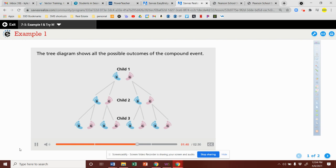The tree diagram shows all the possible outcomes of the compound event. For example, we can follow the branches on the left side of the diagram, which shows the outcome of a boy, then another boy, then a third boy. Label this outcome BBB.